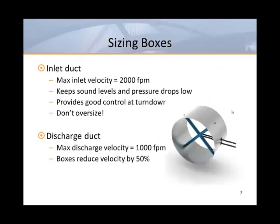So let's look at the basics of sizing boxes. My rule of thumb for sizing inlet ducts, especially for VAV applications, is to select for a maximum inlet velocity as close to 2,000 feet per minute as possible. If I don't exceed 2,000 feet per minute, I shouldn't self-generate noise in the supply ductwork, and 2,000 feet per minute will keep my pressure drops low.